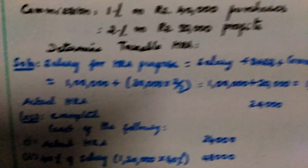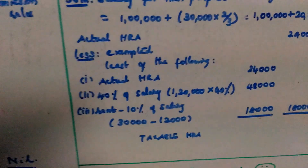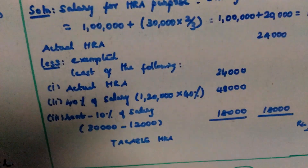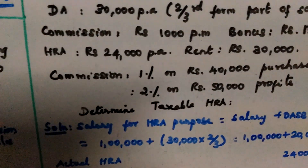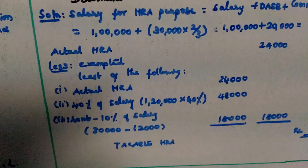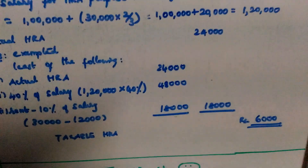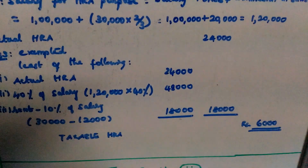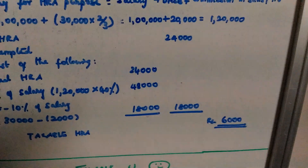Taxable HRA: Actual HRA is Rs. 24,000. Exempted HRA — least of the following: Actual HRA Rs. 24,000; 40% of salary (non-metro) = Rs. 1,02,000 × 40% = Rs. 40,800 approx.; Rent minus 10% of salary = Rs. 30,000 minus Rs. 10,200 = Rs. 19,800 approx. — giving approximately Rs. 15,000 as the exempted amount. Taxable HRA = Rs. 24,000 minus Rs. 18,000 = Rs. 6,000.